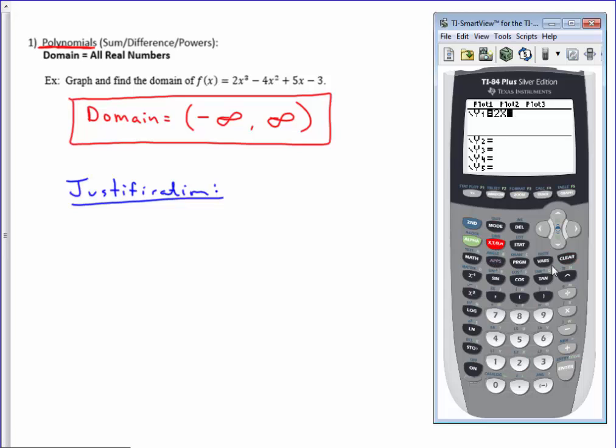So it's 2x raised to the third. I have to arrow over to get me out of the power, minus 4x raised to the second, arrow over, plus 5x minus 3.